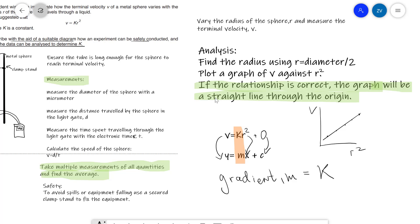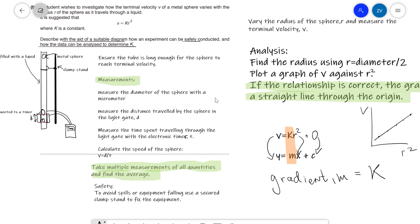Okay guys, so just a little check that we've included everything in this question that's been required from us. First off, we've described with the aid of a suitable diagram how an experiment can be safely conducted. Yep, we've done that, we've included something on safety, and we've also included a very detailed analysis on how the data can be analyzed to determine k, and in the end, k is equal to the gradient.